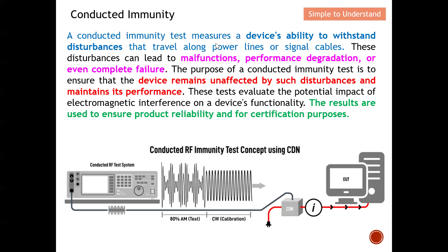A conducted immunity test measures a device's ability to withstand disturbances that travel along power lines or signal cables. This disturbance can lead to malfunction, performance degradation, or even complete failure. The key purpose of the conducted immunity test is to ensure that the device remains unaffected by such disturbances and maintains its performance. The test evaluates the potential impact of electromagnetic interference on the device's functionality, ensuring product reliability and certification.